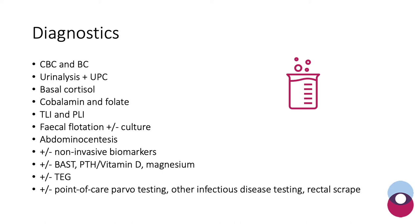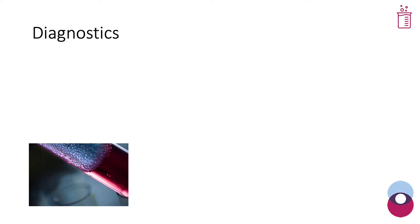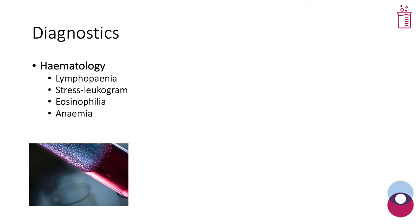Moving on to diagnostics, when working through this differential list there are multiple tests to perform. Starting with haematology, it is not unusual to see lymphopaenia or a stress leucogram in a lot of these cases. Some will have eosinophilia and some might also be anaemic, especially if they have gastrointestinal blood loss.